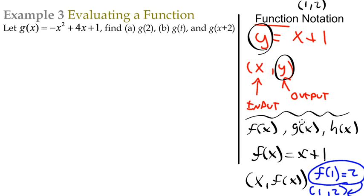So this is the type of notation that we want to start using now. We want to get away from saying y equals and then some kind of graph. We're going to start using f of x, g of x, h of x. It doesn't matter what we use there. So a little bit of knowledge there on function notation. Let's come over here now, and we're going to let g of x equal negative x squared plus 4x plus 1, and we need to find g of 2, find g of t, and find g of x plus 2.